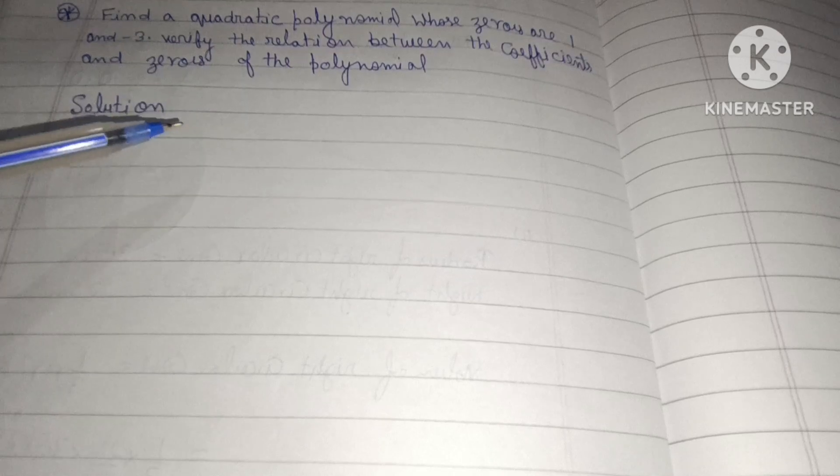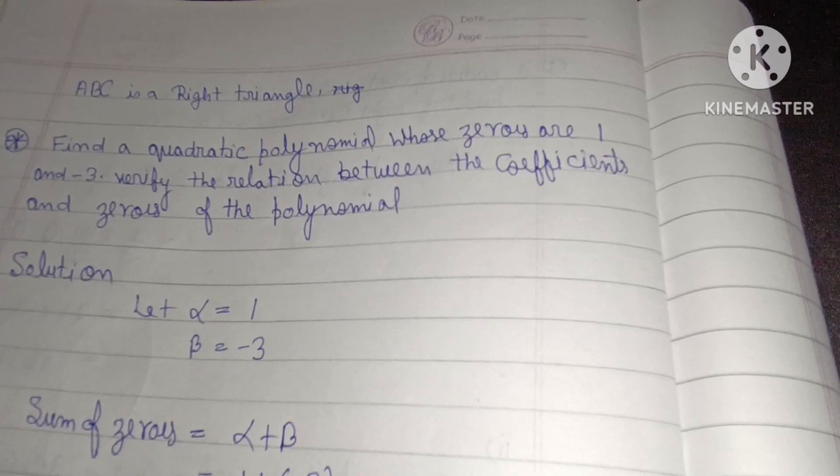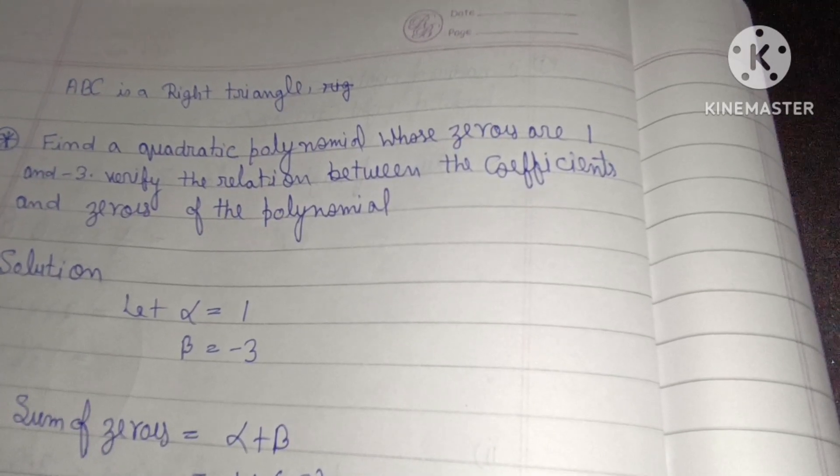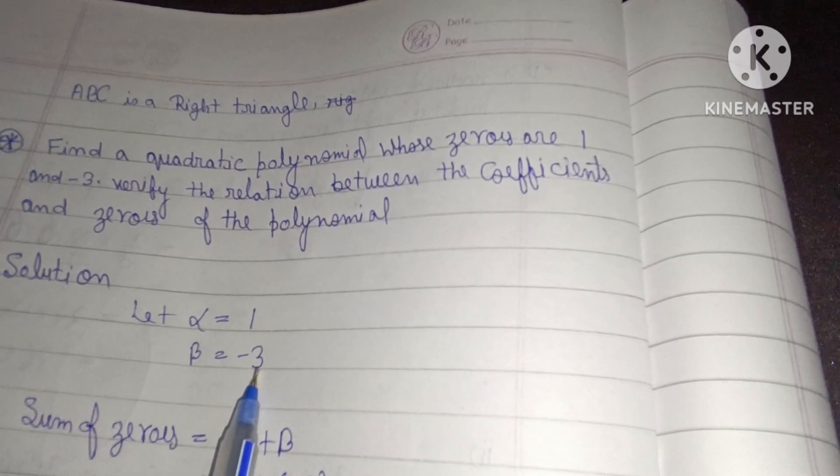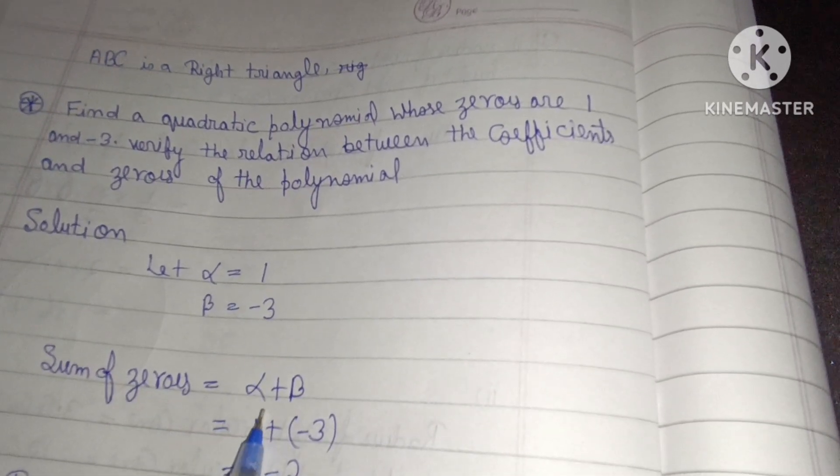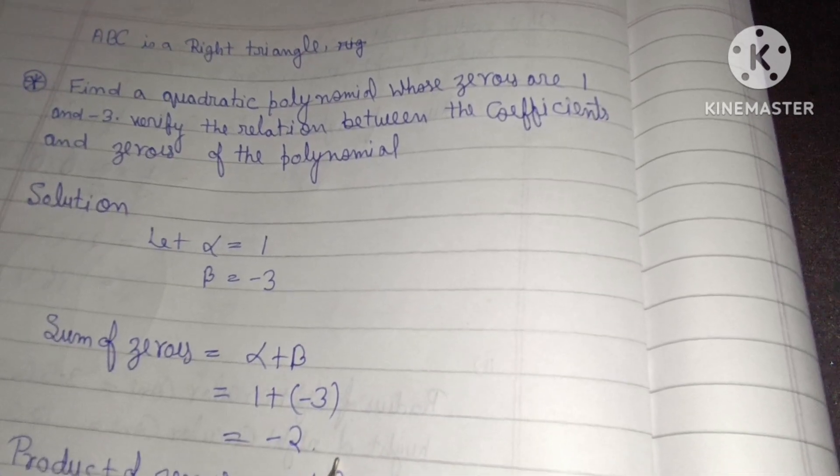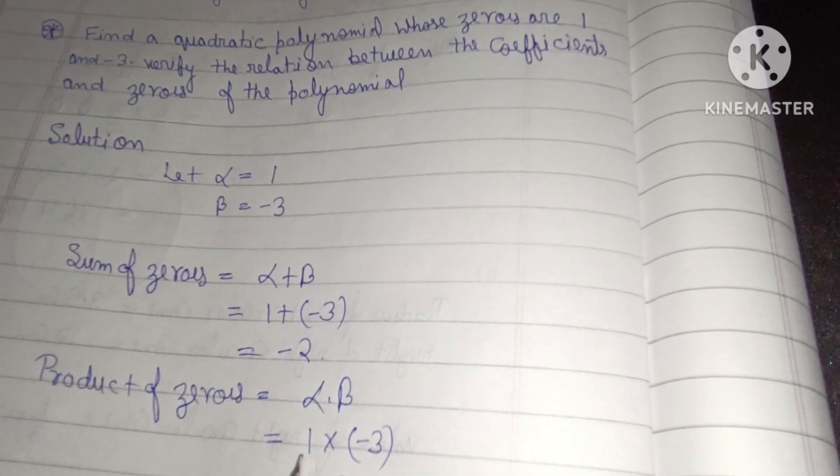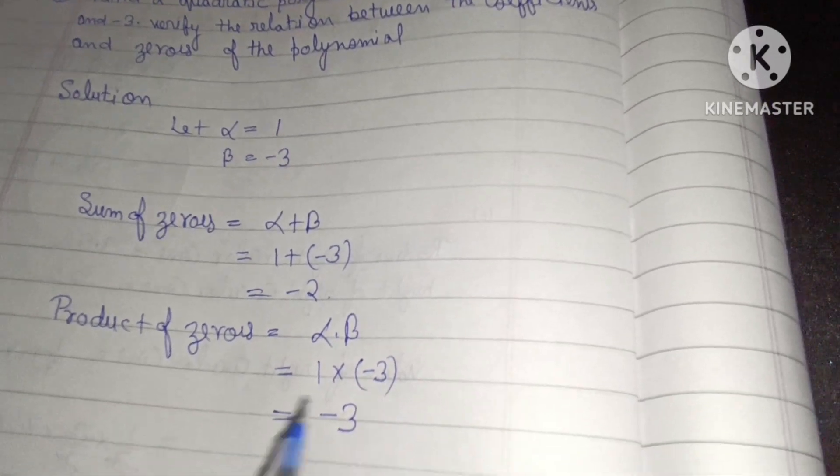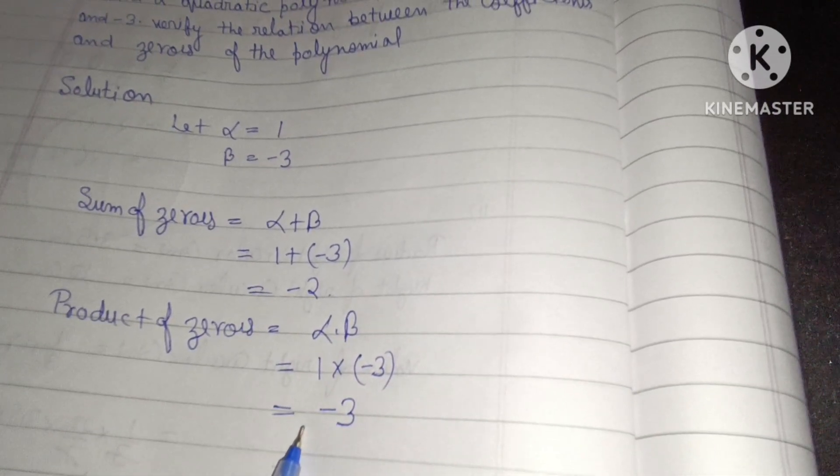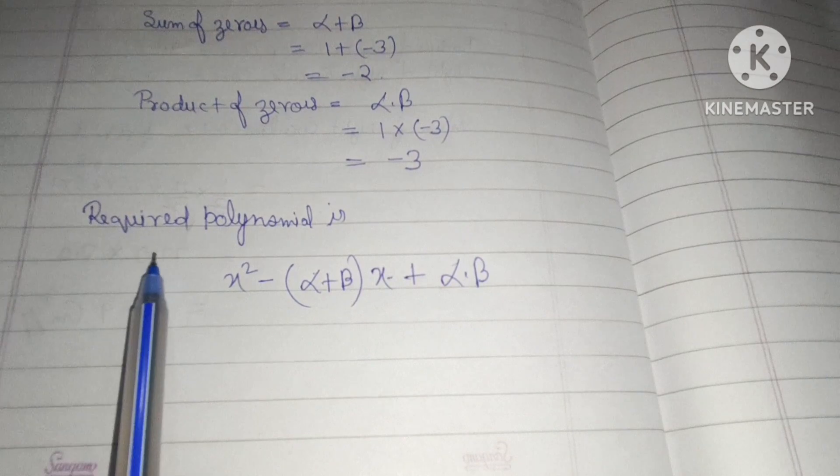Solution: Let alpha = 1, beta = -3. Sum of zeros: alpha plus beta = 1 plus minus 3 = minus 2. Product of zeros: alpha into beta = 1 into minus 3 = minus 3.